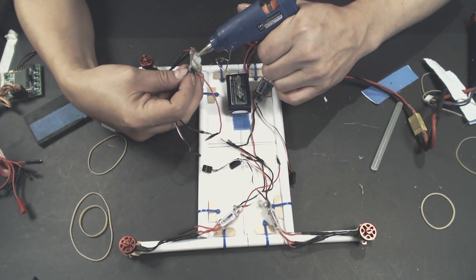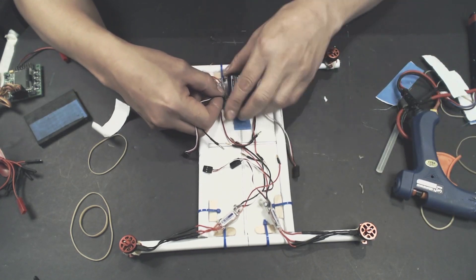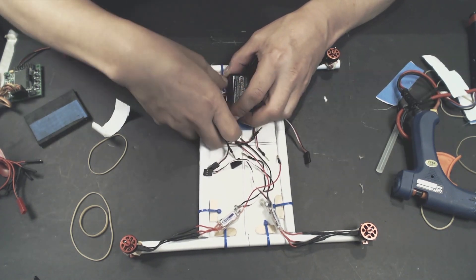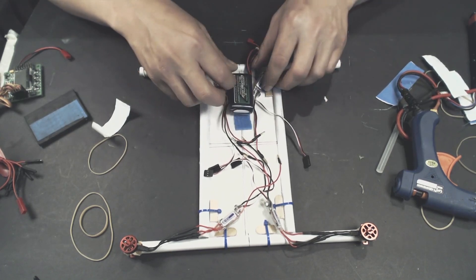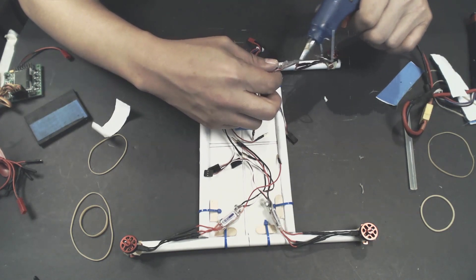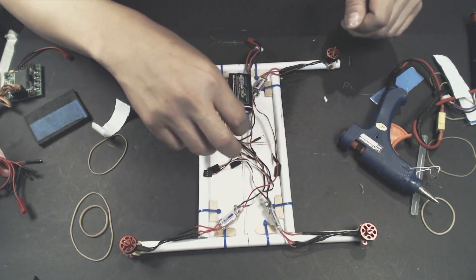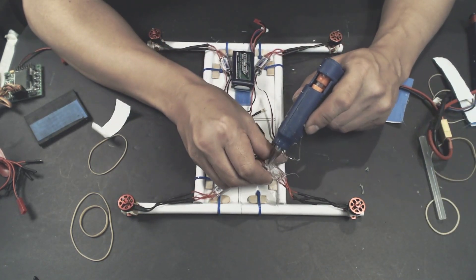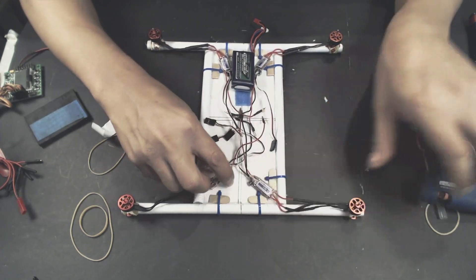Right now I'm putting some hot glue on the ESCs so they're not flapping around and moving too much. I'm putting it over the shrink wrap so it's easy to peel off after. Just apply a little heat or try and peel it off and it comes right off. It just makes it a little bit neater.